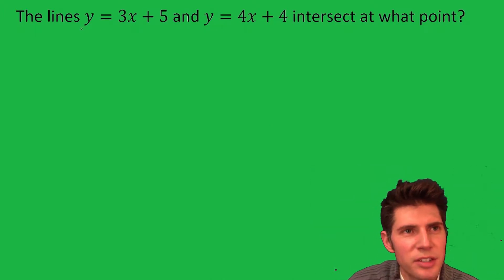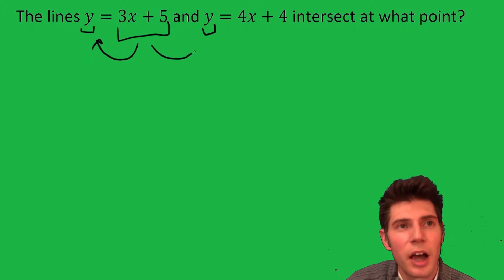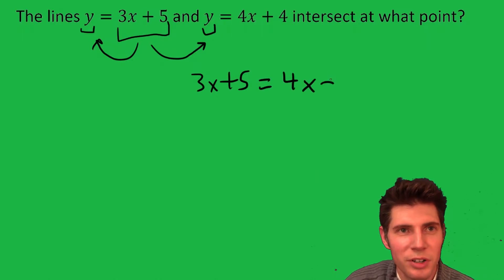Probably the easiest way to handle this, since the y's are isolated in both, is substitution. So I'm going to plug this 3x plus 5 that's equal to y into this y. So we end up with 3x plus 5 equals 4x plus 4.